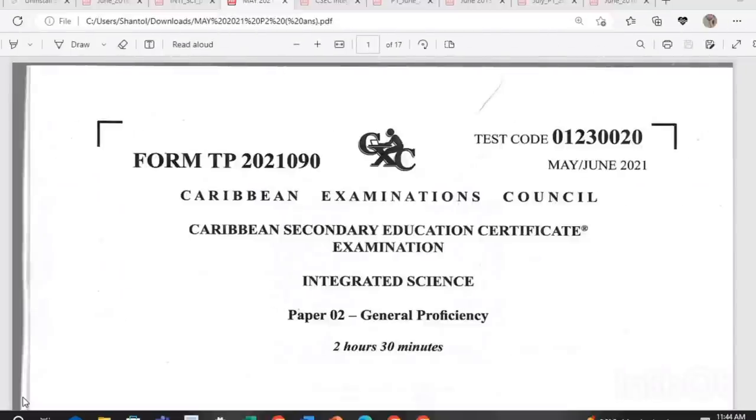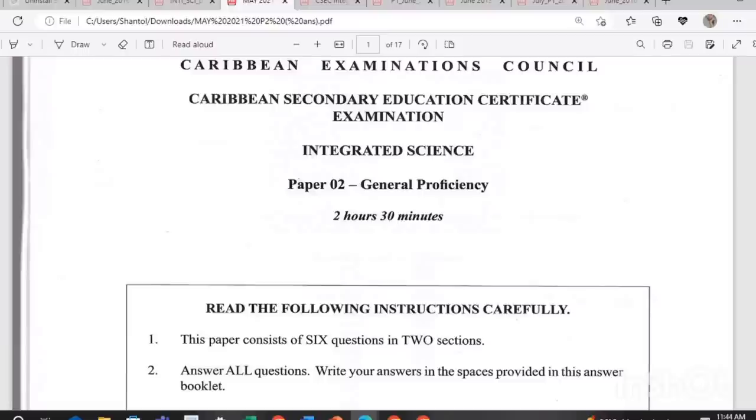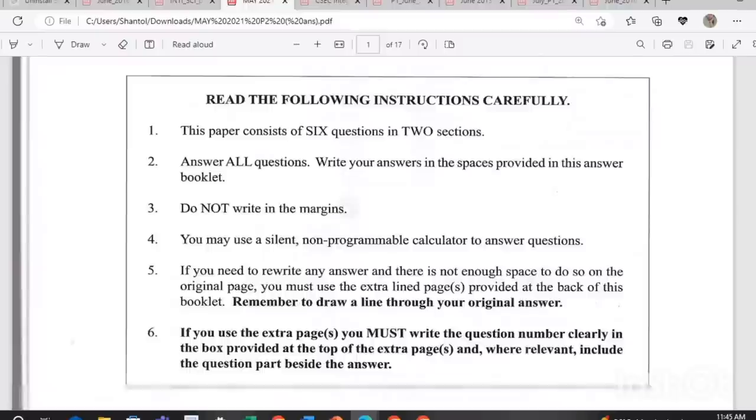Welcome back to another video, Past Papers 101 with Ms. Edwards. Hopefully your paper one examination was successful and you saw questions to papers that you had practiced before. Now in preparation for your paper two, this paper is from May, June 2021. Two hours and 30 minutes this paper lasts for and you get six questions in two sections and you must answer all the questions. All questions from this paper will be answered in this video. Remember to like this video and share with your friends.